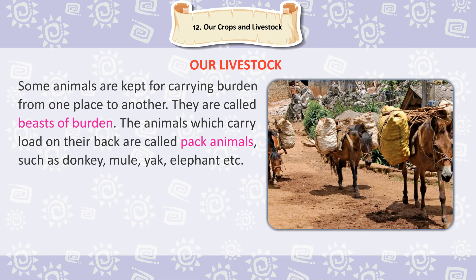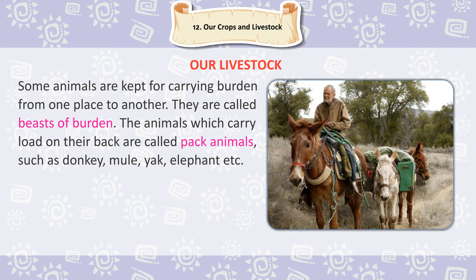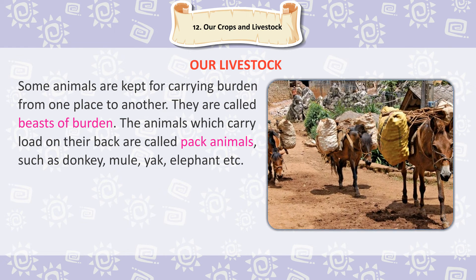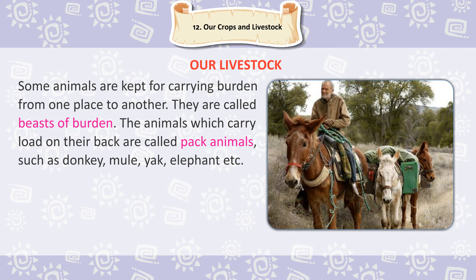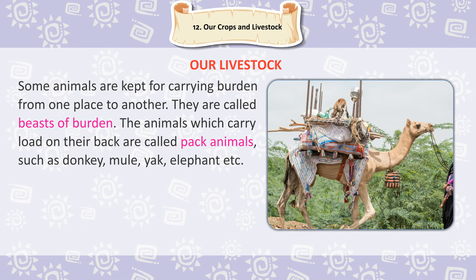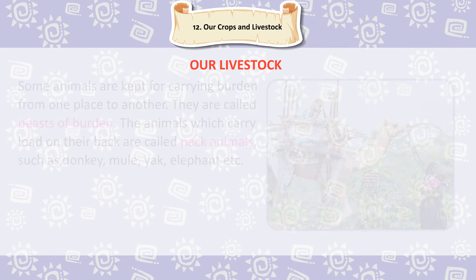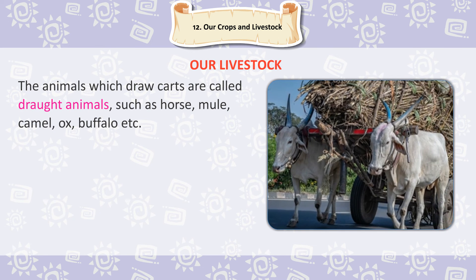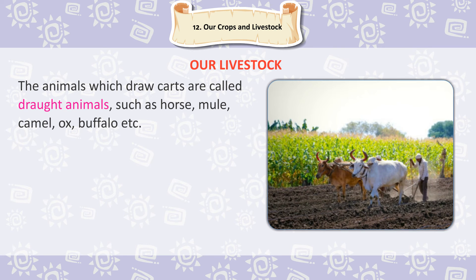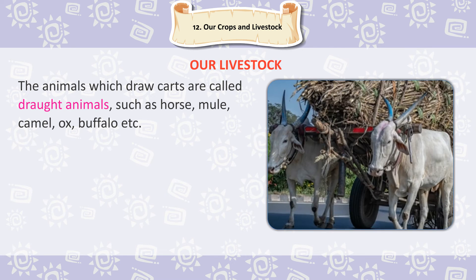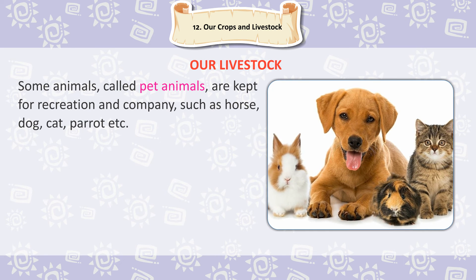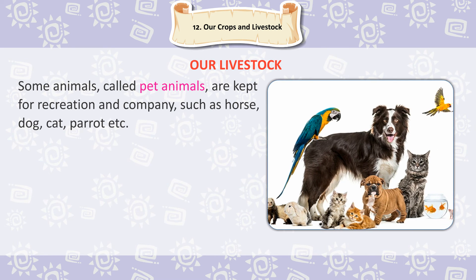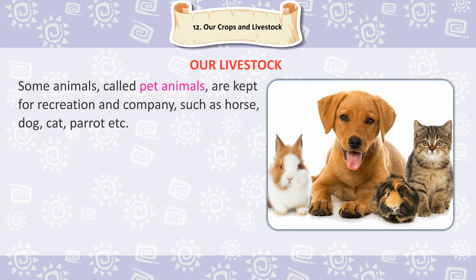Some animals are kept for carrying burden from one place to another — they are called beasts of burden. Animals which carry load on their back are called pack animals, such as donkey, mule, yak and elephant. Animals which draw carts are called draught animals, such as horse, mule, camel, ox and buffalo. Some animals called pet animals are kept for recreation and company, such as horse, dog, cat and parrot.